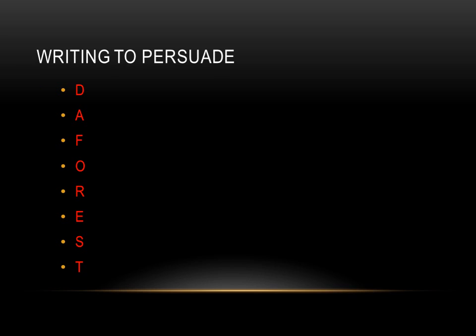Now let's quickly go through the features of some writing styles. Writing to persuade — pause the video and try to remember the features of the FOREST. Direct address such as 'you should do this.' An anecdote is a short story that proves your point — for example, if you were appealing for the RSPCA, telling a story about a dog called Billy who'd been rescued and nursed to health. Alliteration could be 'big bad Billy' — words that all start with the same sound, used for emphasis.